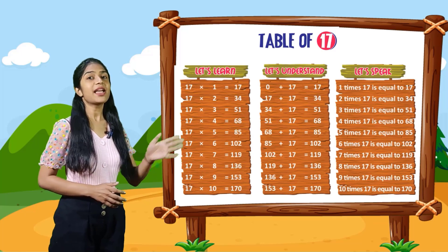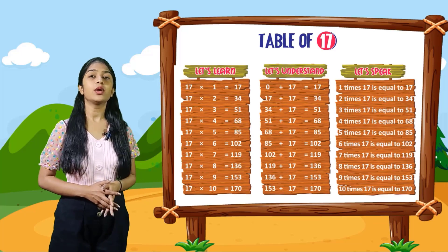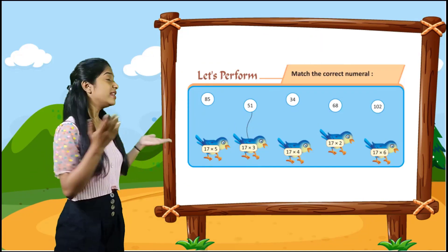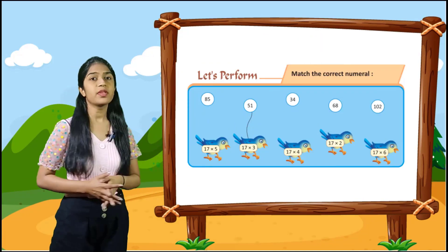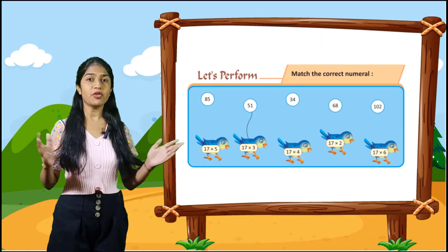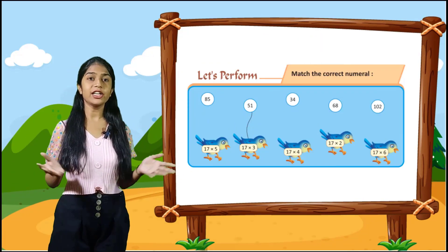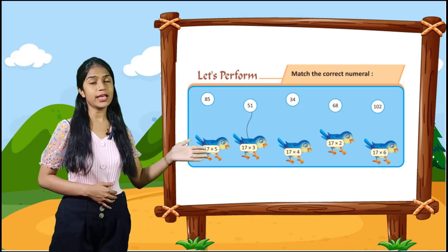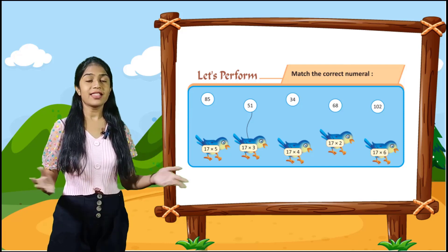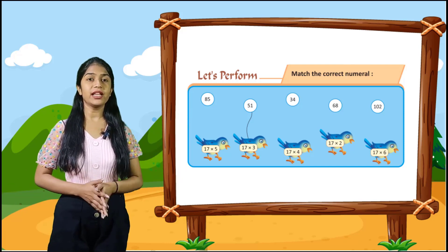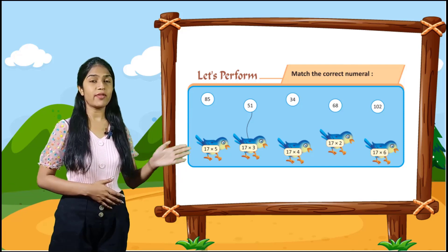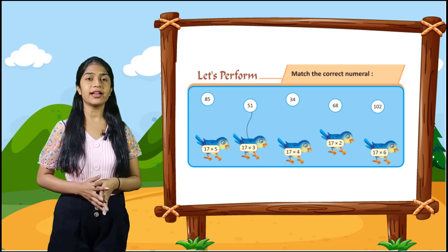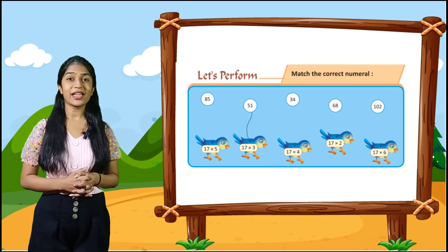10 times 17 is equal to 170. So now let's perform. Here we have to match the correct numerals. Here 1 is done for you: 51. 17 into 3 is equal to 51, so here 17 into 3 is the correct answer.